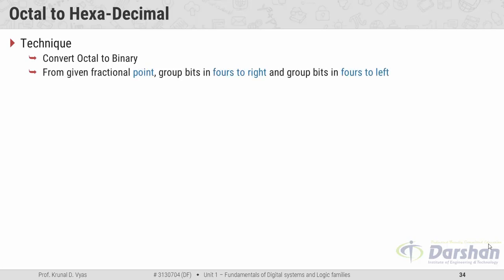For this conversion, the technique is: first convert the octal number to binary. From the given fractional point, group bits in fours to the right and group bits in fours to the left. Then convert the binary number to hexadecimal. For this conversion, you have to remember octal to binary conversion and binary to hexadecimal conversion. If you are not aware of these two conversions, you have to see the previous videos first.